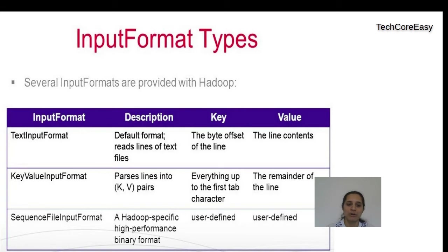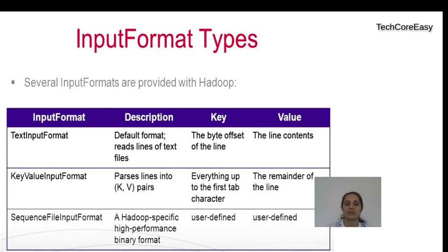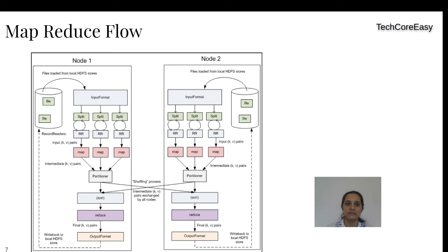The second input format is Key-Value Input Format. As the name indicates, it divides the line into key and value: all data before the first tab character is the key, and all data after the first tab character is the value. This is also human-readable. The third is the Sequence File Input Format, where data is stored in machine-readable binary format. This improves performance because no conversion is required, and the user can define how key and value are determined.